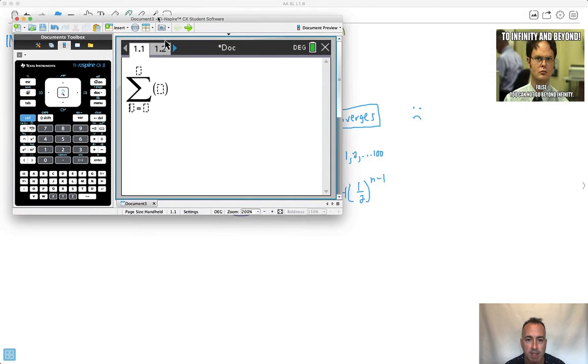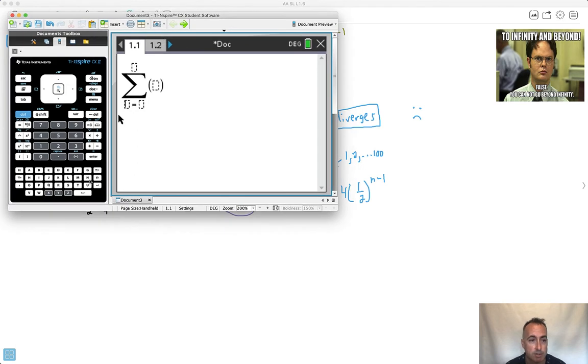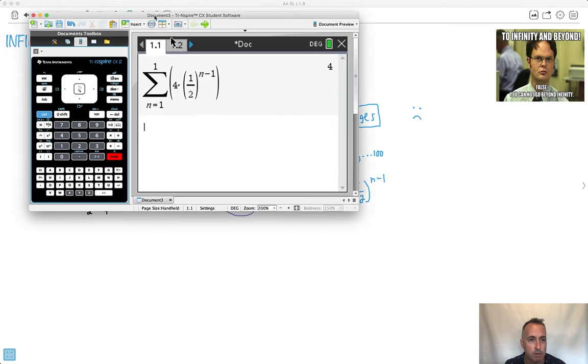So n equals 1 at the bottom. I'm going to set this up really nice. 4 times, I'll put a bracket here, a nice pretty fraction, 1 over 2, all that to the power of n minus 1. Now what am I going to do with the upper limit? I'm going to play around with that value. So I'll copy this. Now I'll change how far I go. If I add up just the first term, it should just be 4. Okay, that makes sense.